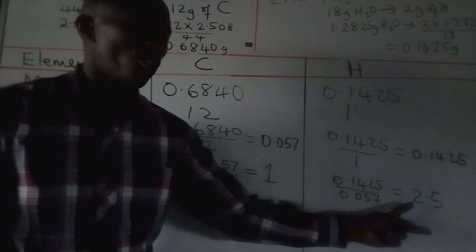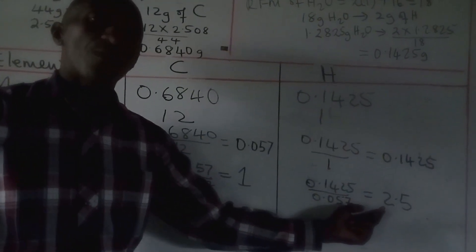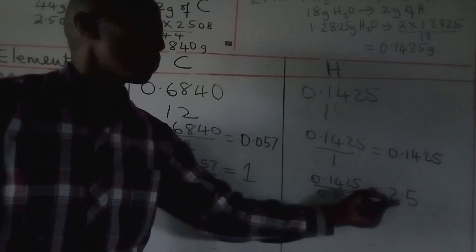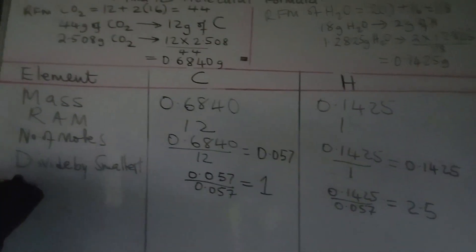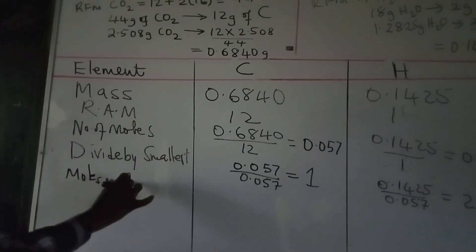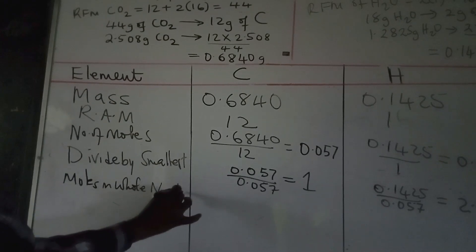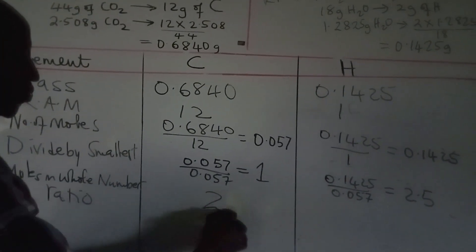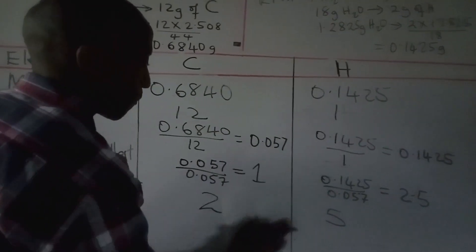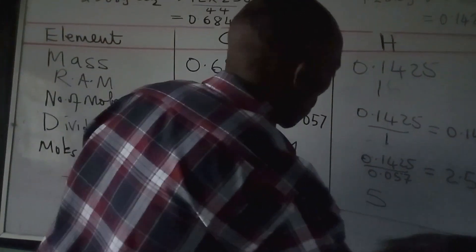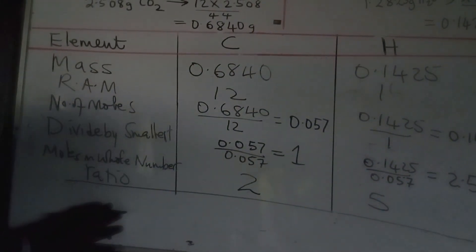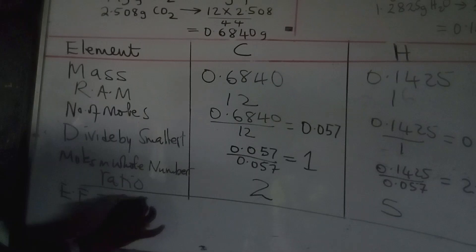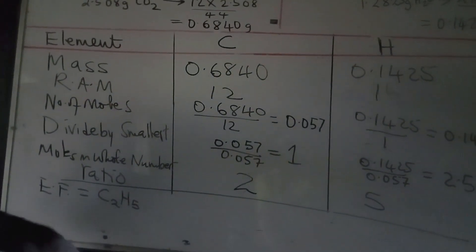As we mentioned earlier, when we obtain a mole ratio of 2.5, we multiply the entire row by 2 to get whole number ratios. So carbon becomes 2 and hydrogen becomes 5. The empirical formula is therefore C₂H₅.